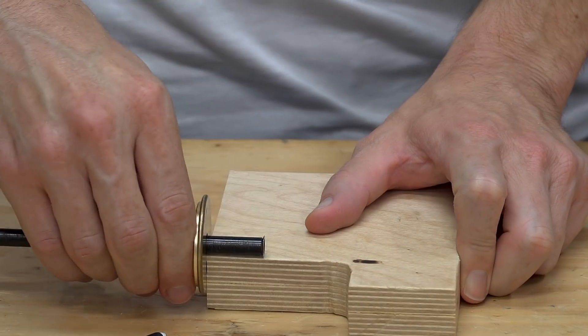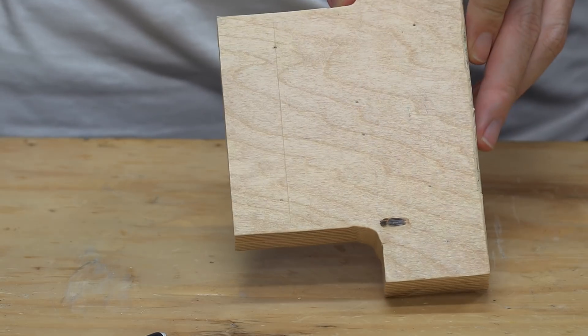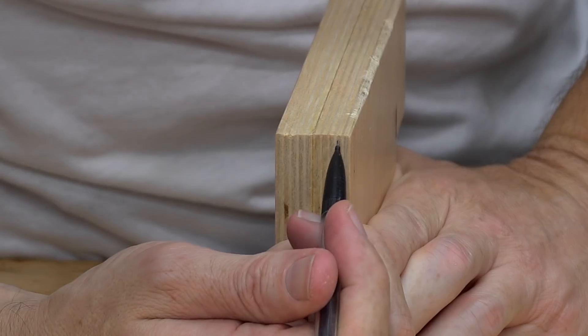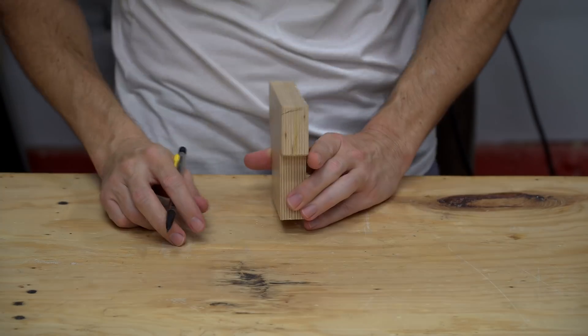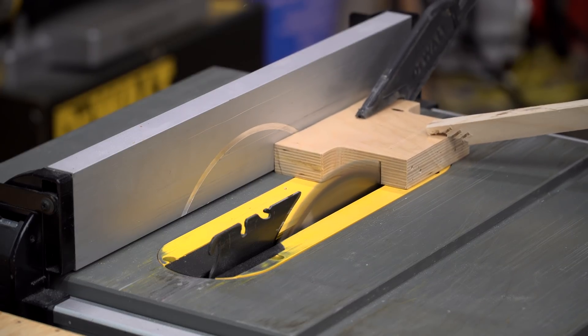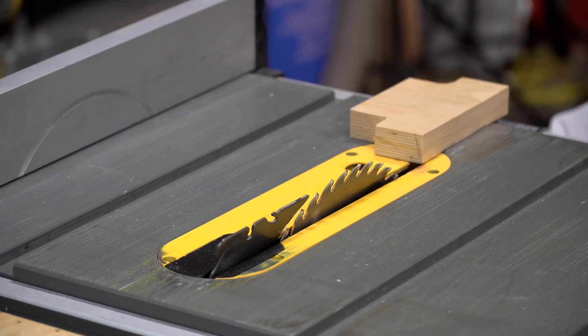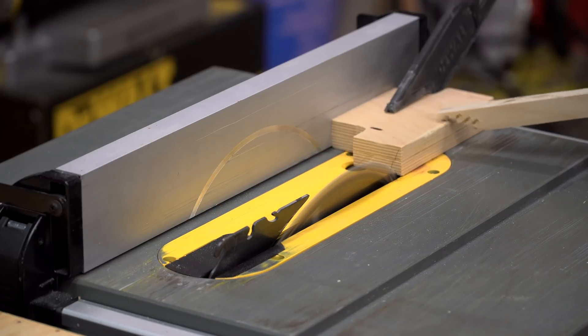Then I made a mark for the cut that will reduce the height of the tool rest. Then I made an angled mark because a lot of you suggested that I put a slight angle on the tool rest. I didn't use a specific angle, but I think it's about 15 degrees.